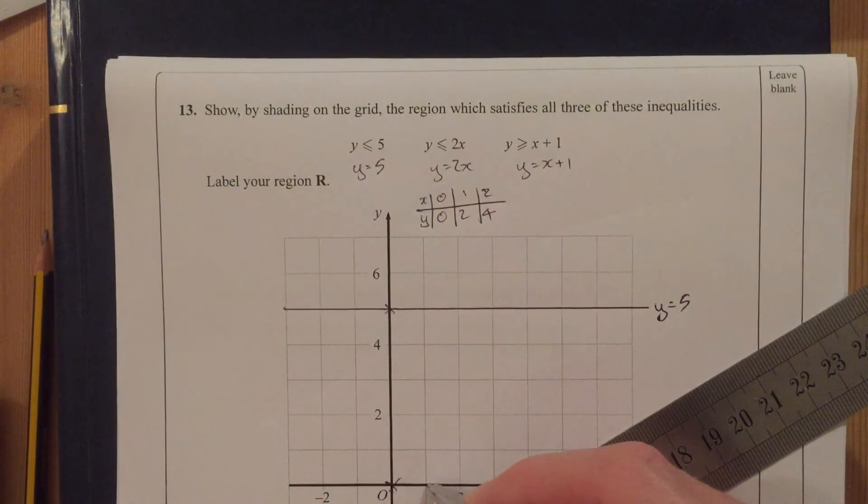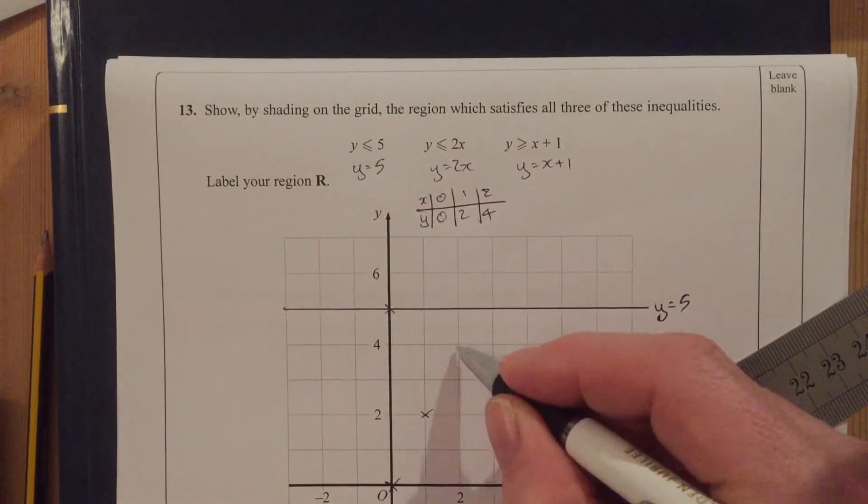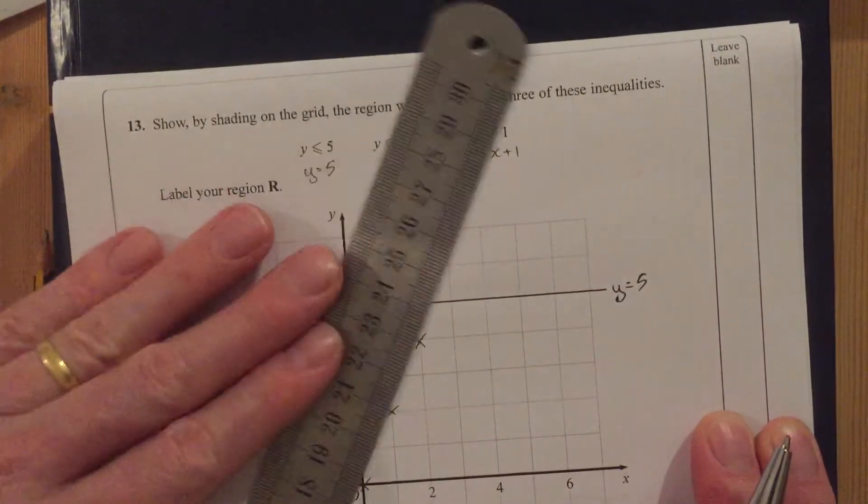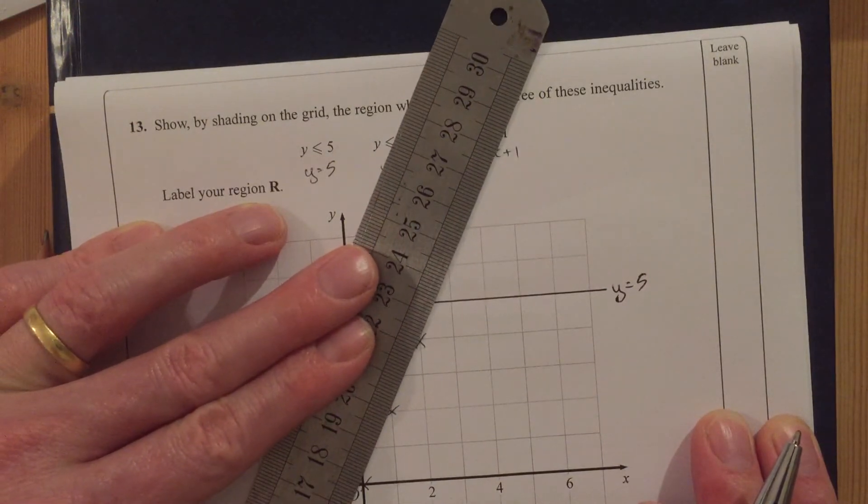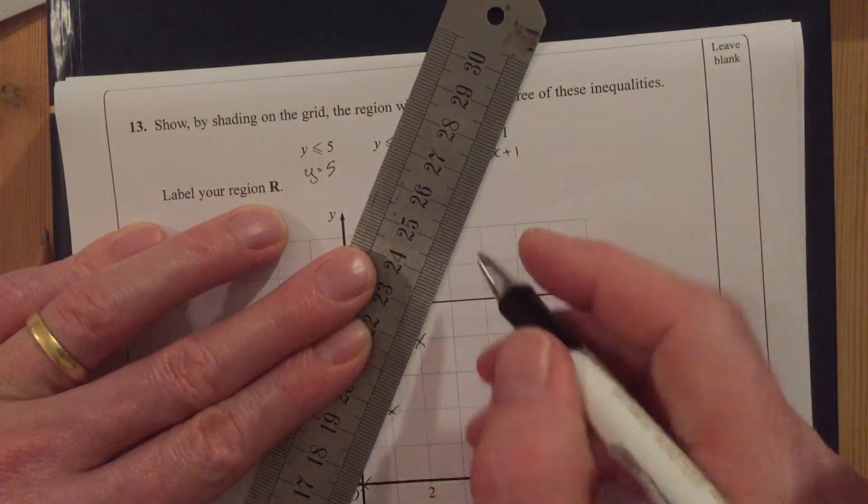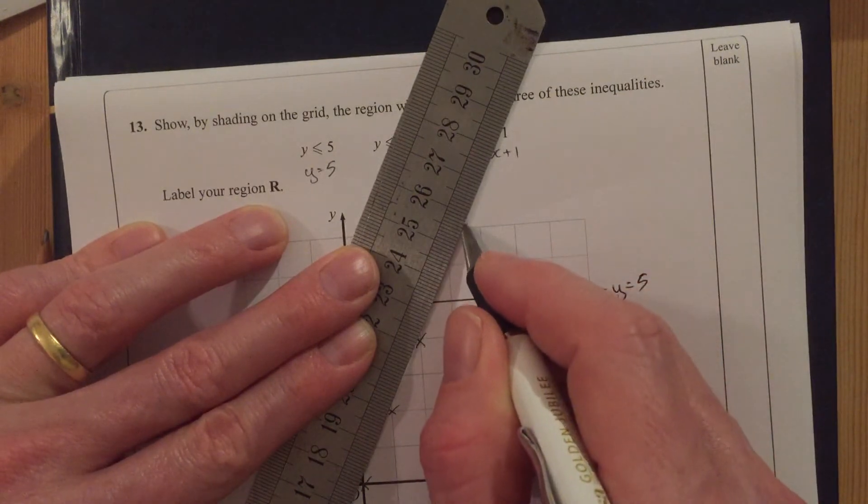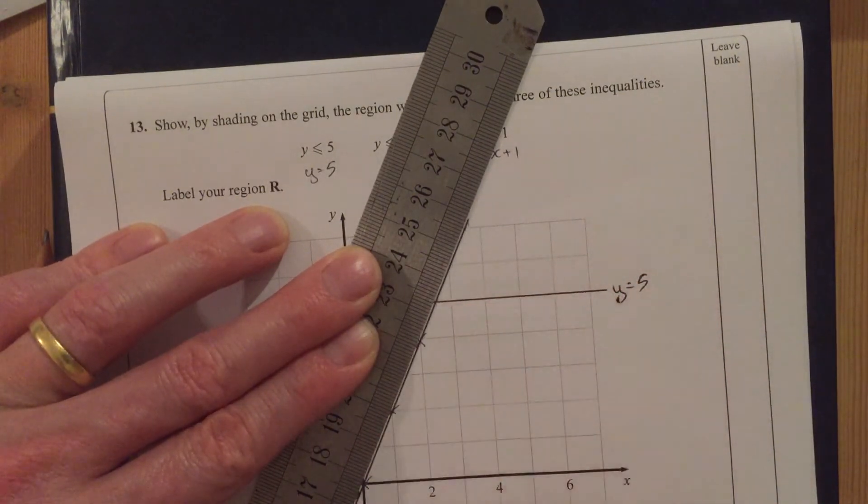So 0, 0, 1, 2, 2, 4. That's enough for me to see that that's a straight line. Put my ruler out. A bit of patience. And I can draw that all the way through.